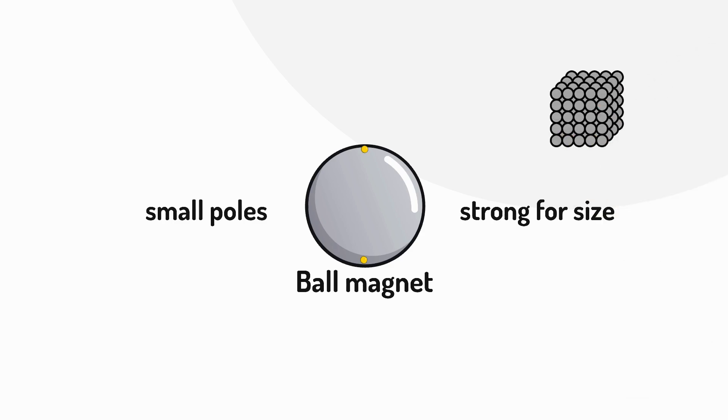So even though they have small poles, their entire surface can interact with magnetic fields from other magnets. They're used for magnetic toys and for magnetic jewelry.